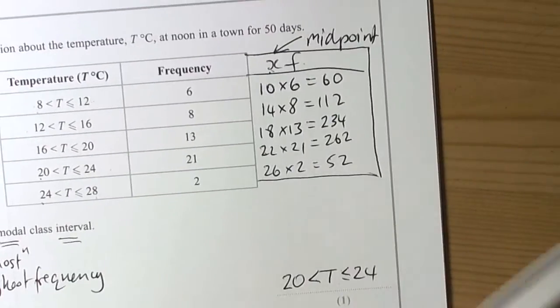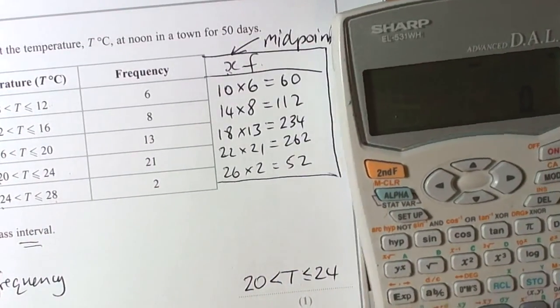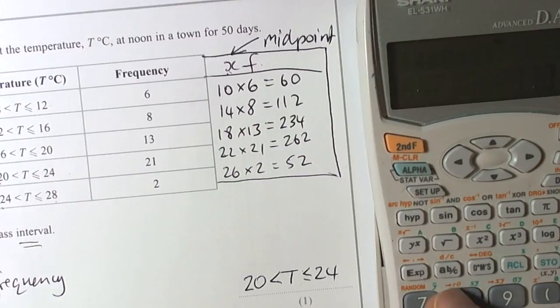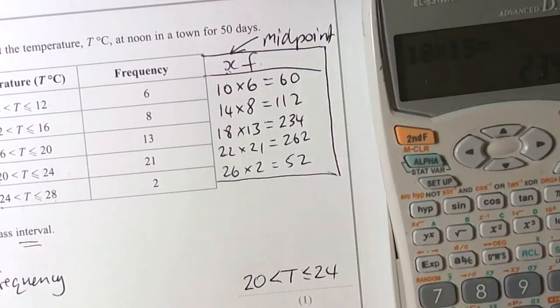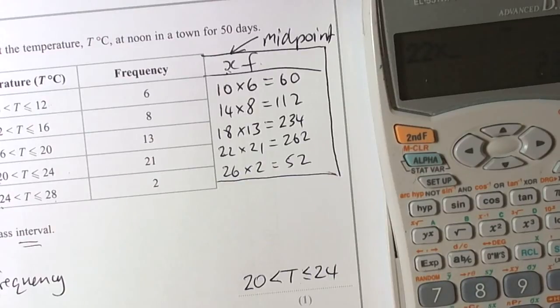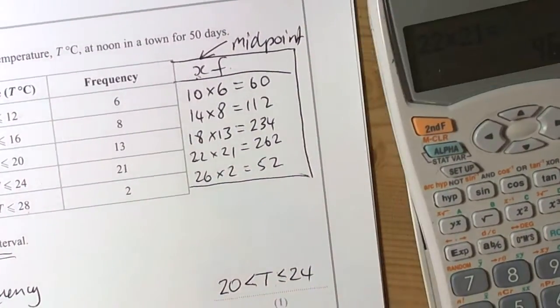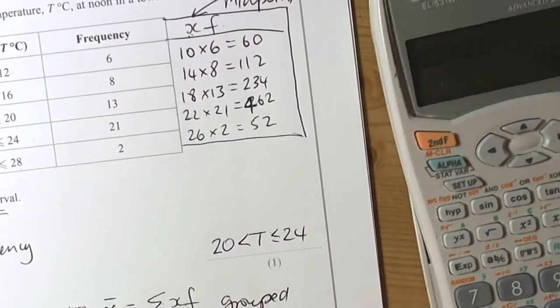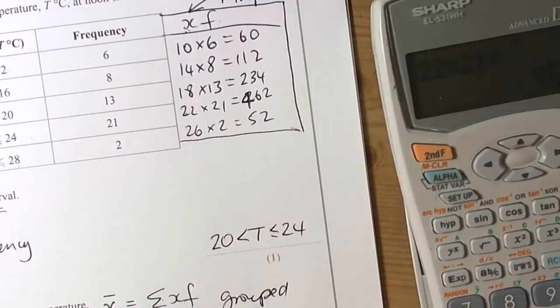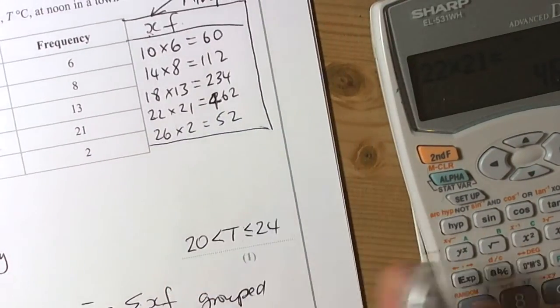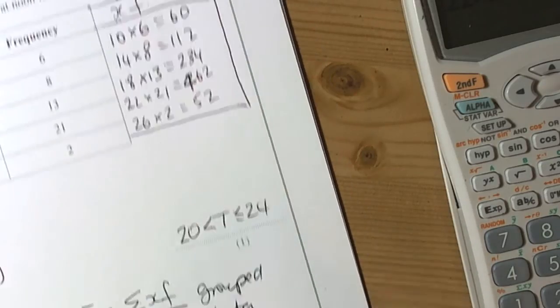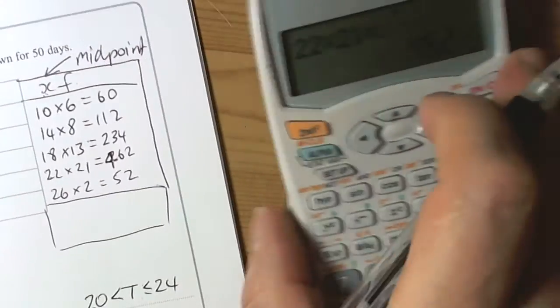We don't rely on our mental math all the time, so we do the checks of the important ones. So 14 times 8, 112, yep. 18 times 13, 234, yep. 22 times 21, 462. So again, important to check, made a mistake there, didn't write down the 4. So 22 times 21 is 462, and 26 times 2 is 52.